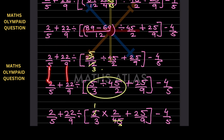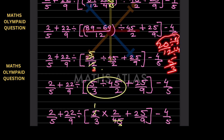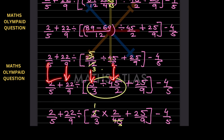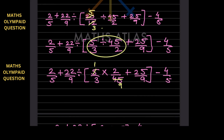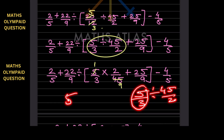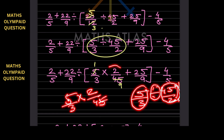Now we simplify 20/12. Both 20 and 12 are divisible by 4, giving 5/3. So the expression now has 5/3, and everything else stays the same. Now we encounter a division: 5/3 divided by 45/2. When dividing fractions, we convert division to multiplication by flipping the second fraction — taking its reciprocal. So 45/2 becomes 2/45. The expression becomes 5/3 multiplied by 2/45.